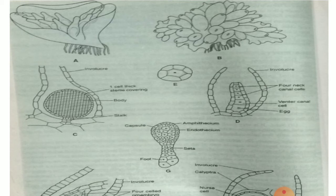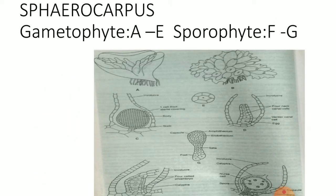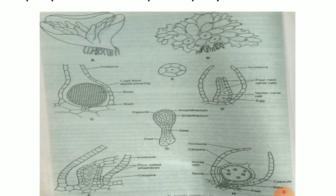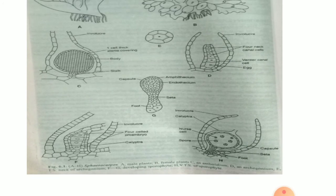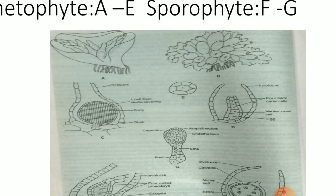Coming to sexual reproduction: all species of the genus Sphaerocarpos are dioecious, that is heterothallic. In heterothallic species, both male and female plants are separated and differ from each other in external morphology. The male plants are relatively smaller in size compared to the female plant — figure A is the male plant and figure B is the female plant.